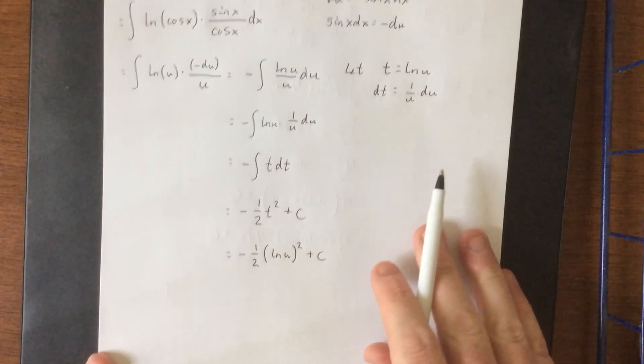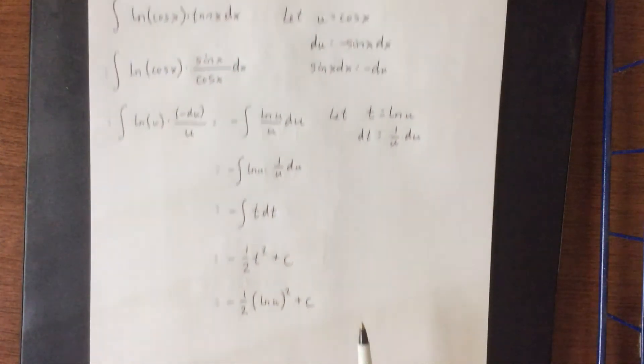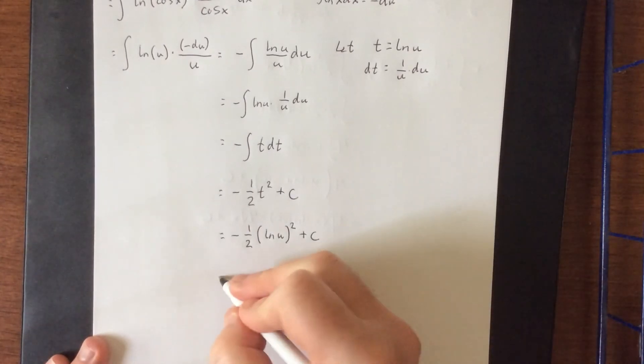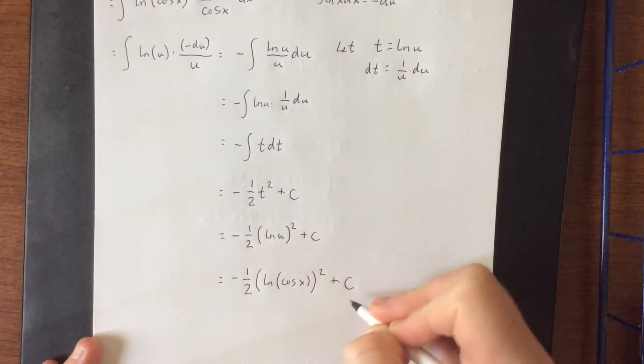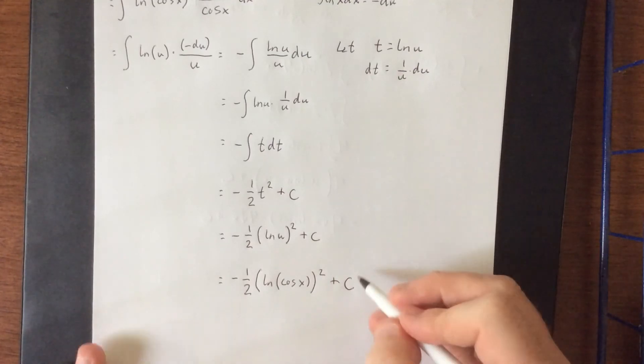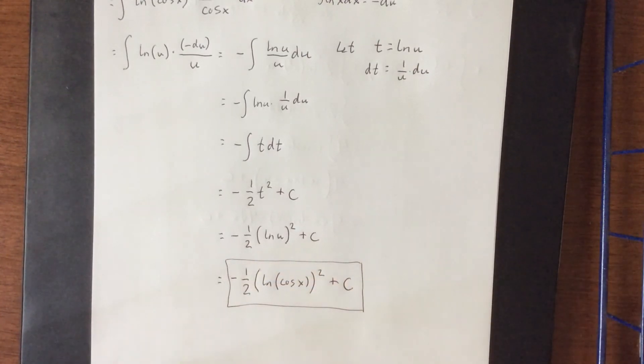Finally, we'll substitute back from way at the top of the page, u is equal to the cosine of x. And so I will substitute that back in as well. So negative 1 half times the natural log of the cosine of x, quantity squared plus c. And of course, if you're interested in checking your answer, which I currently am not, you can always differentiate this thing and see if you wind up with something good. See you soon.